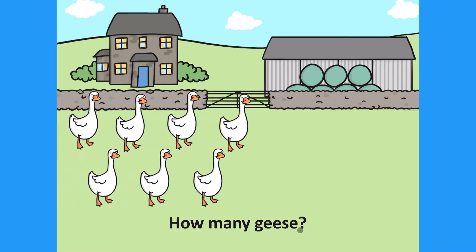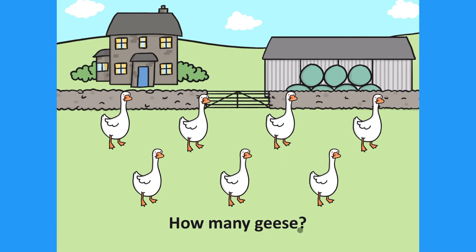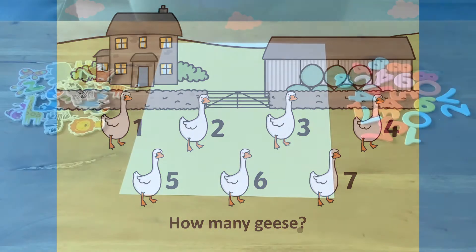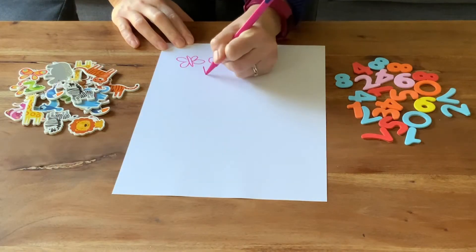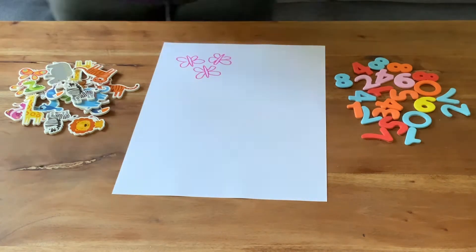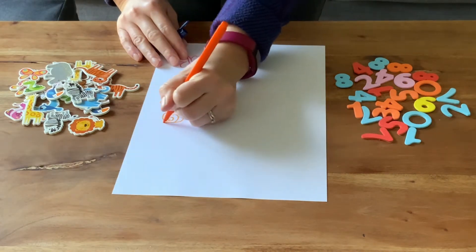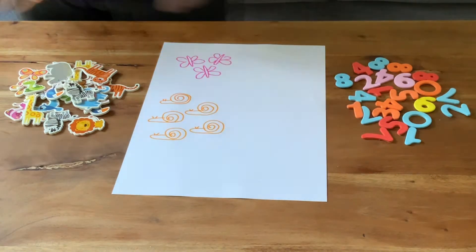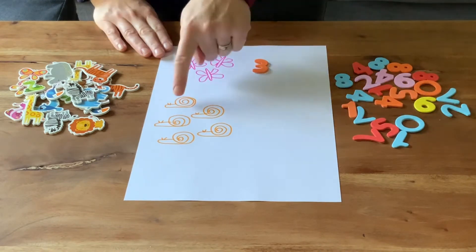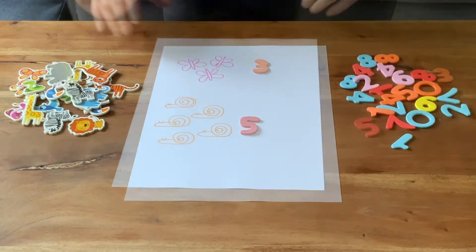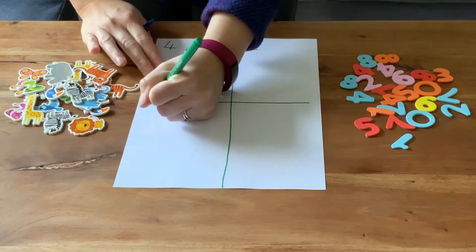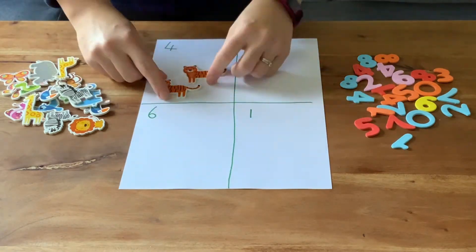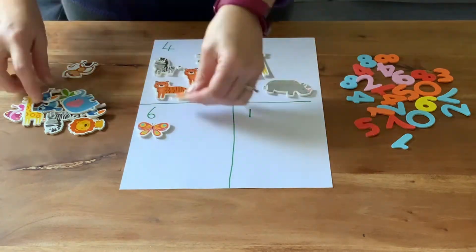Now, can we count the geese? Are there more geese than cows or less? Click to count each goose — seven geese altogether. After working through the PowerPoint, why not make your own counting worksheets? You could draw animal pictures for children to count. Can they find the correct number to match it? Or perhaps you could write some numbers on the paper and children can count out that many animals.